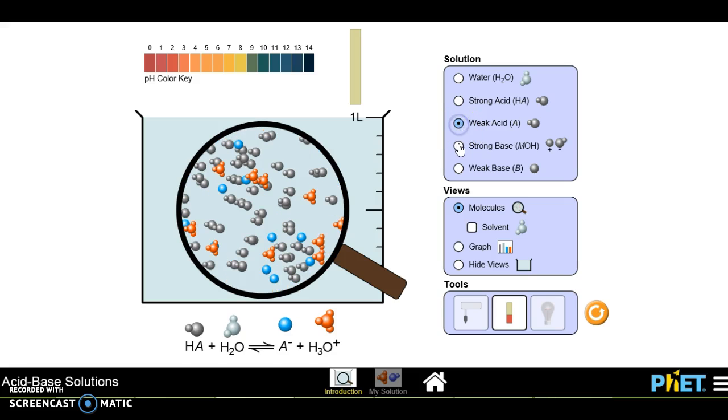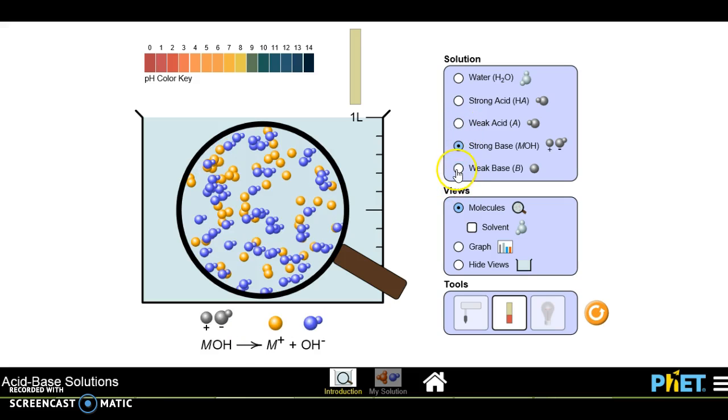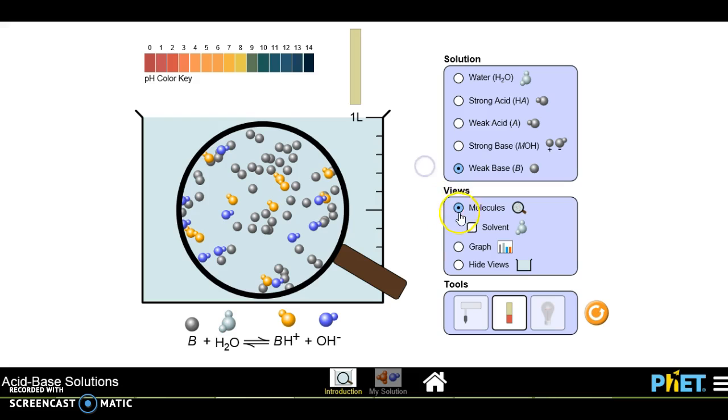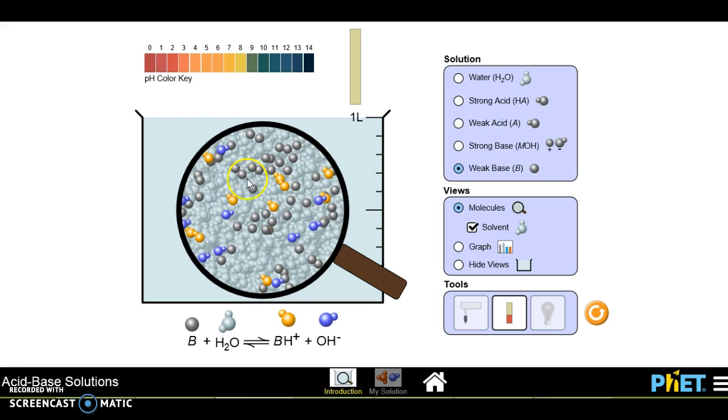There are strong base and weak base. You can view the molecules here. You can also see the solvent, and you all know that the main solvent in acids and bases is water.